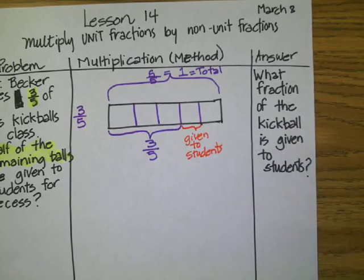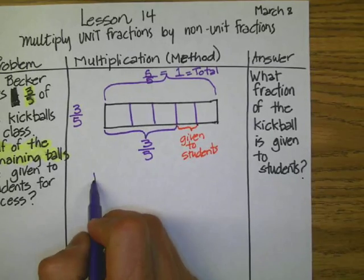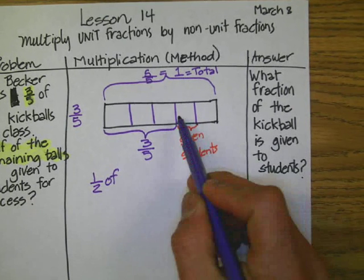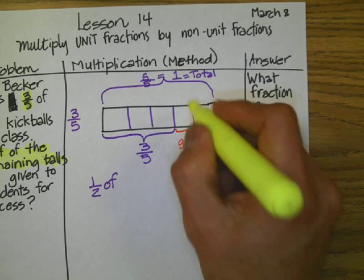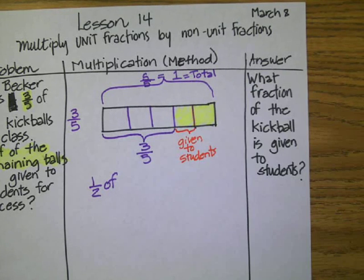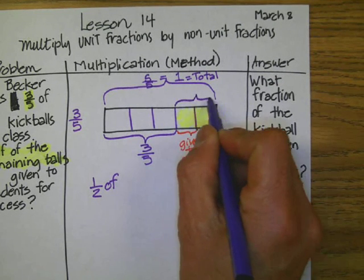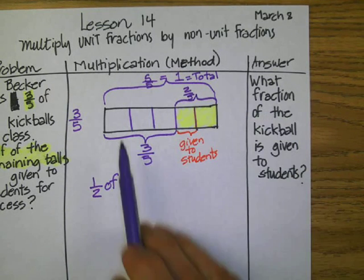So now we can just write this down. The answer is going to be very simple. This one says one-half of the remaining. The remaining balls are these ones right here. We need to know how much is half of that. If you think about this, this whole thing is called two-fifths, because each of these is a fifth. So that's two-fifths — half of that, so half of two-fifths.